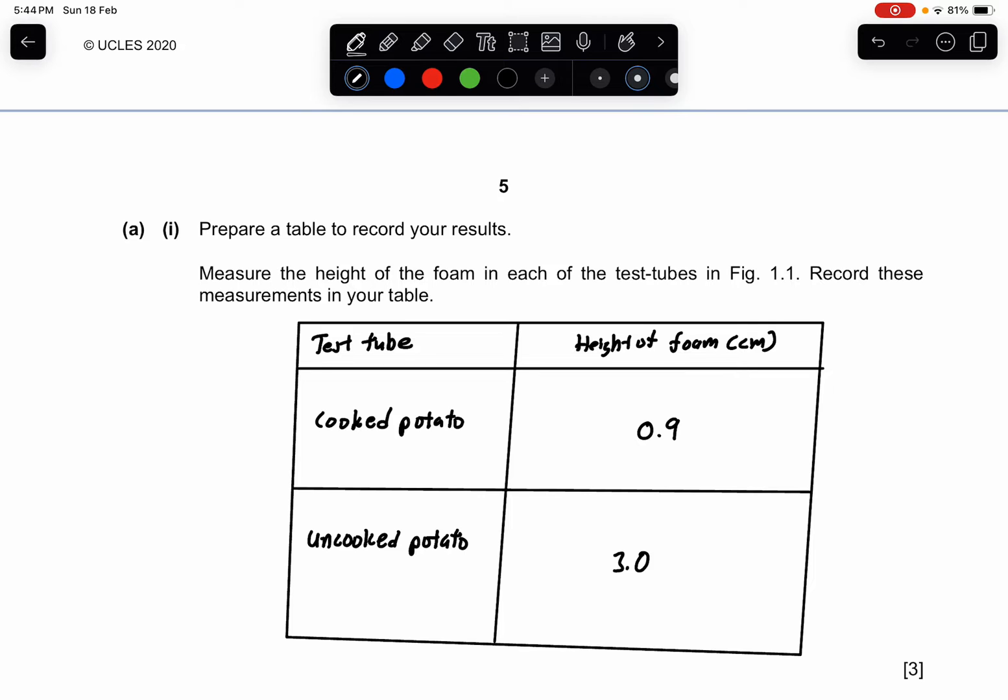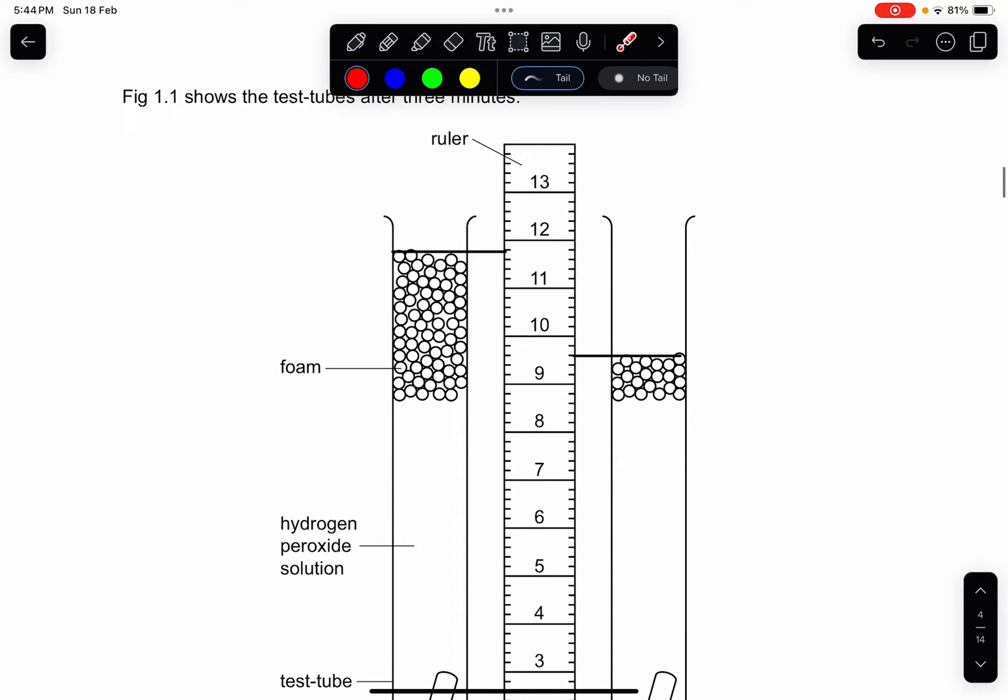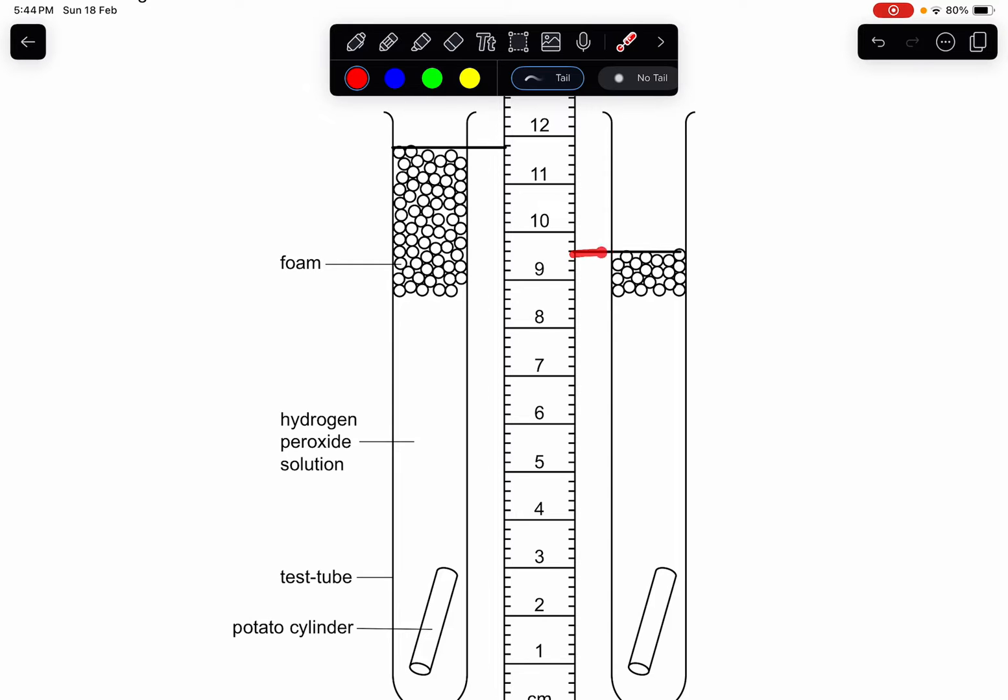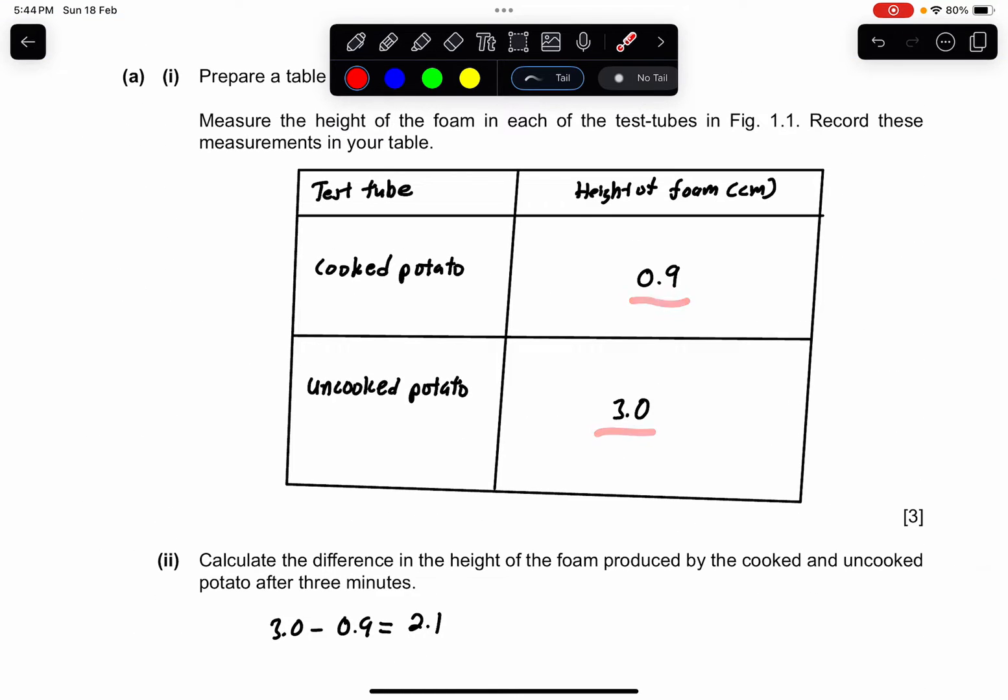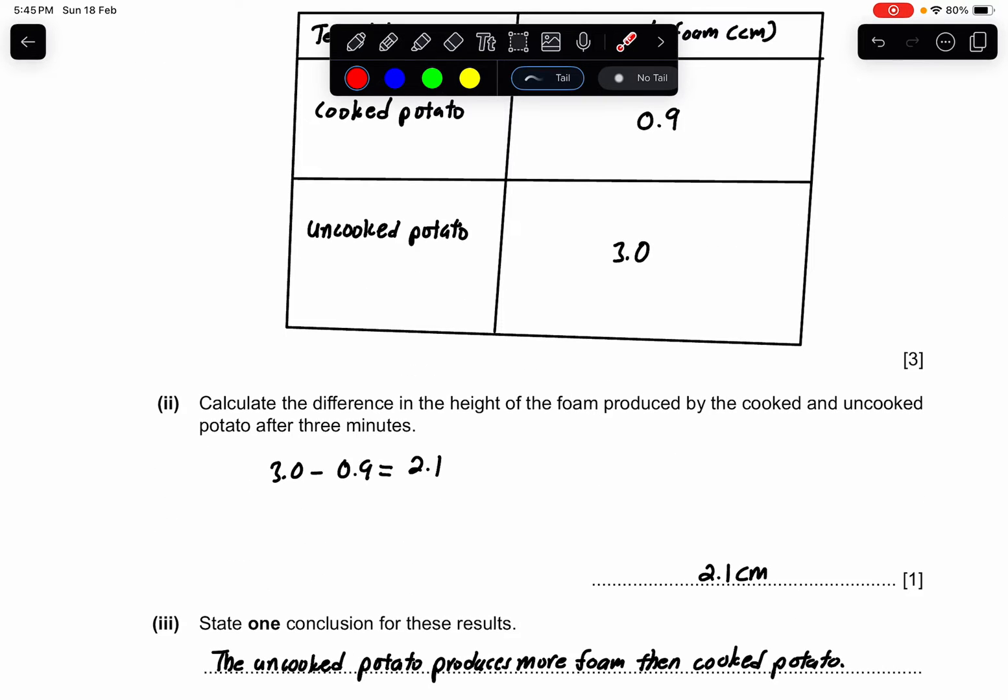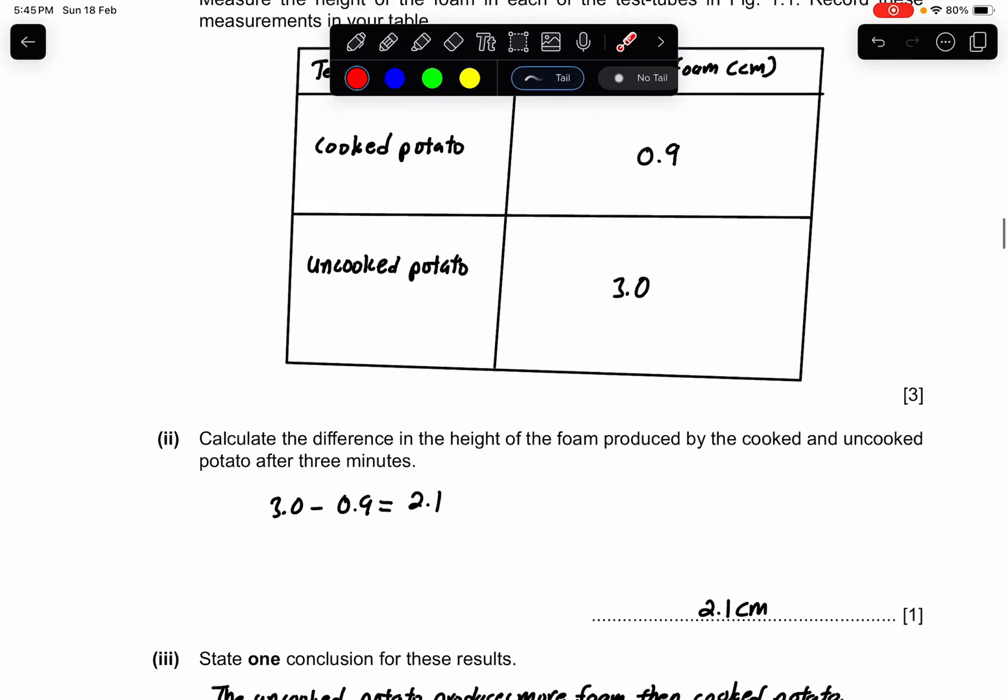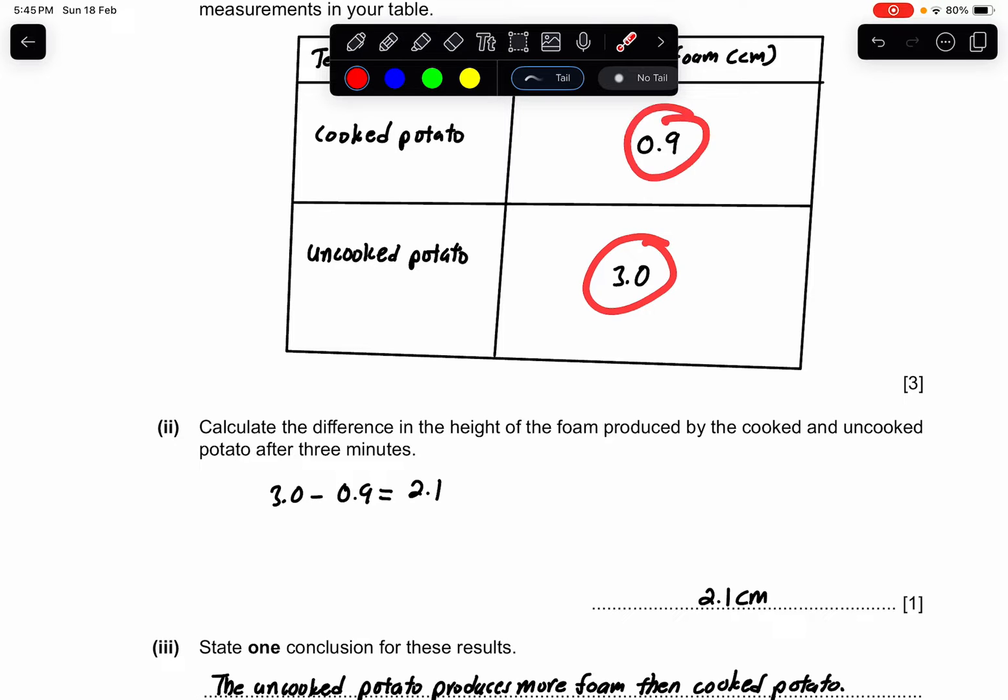So I need to draw a table with two columns and about three rows. I put one as the cooked potato and one as the uncooked potato. Where do I get the height of the foam? It's by measuring this length and this length and subtracting them. You measure this and you measure this and you get the height of the foam also. So what I got is 0.9 and 3.0. The answer may differ, so please check the mark scheme to check whether your values are within the specific range. Part 2 asks: calculate the difference in the height of the foam produced by the cooked and uncooked potato after 3 minutes. So after 3 minutes, just take this value minus this value and you will get 2.1 cm.